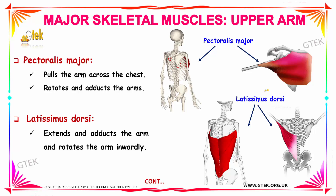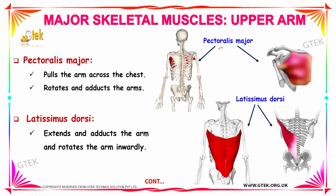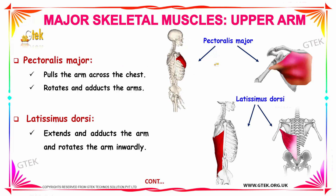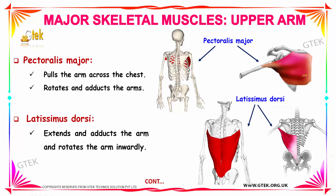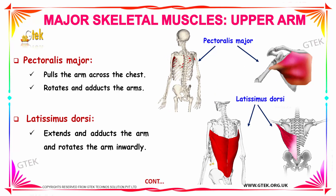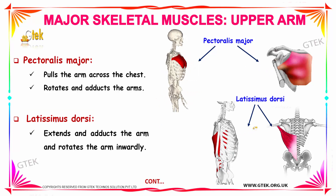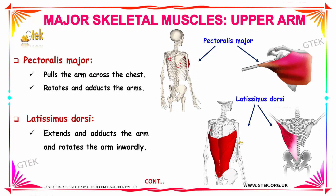Next we are going to see the major skeletal muscles located in the upper arm region. First we have pectoralis major. Your pectoralis major is located near the chest and it pulls the arm across the chest. It rotates and adducts the arm. Our next muscle is latissimus dorsi, located in this region. It extends and adducts the arm and rotates the arm inwardly.